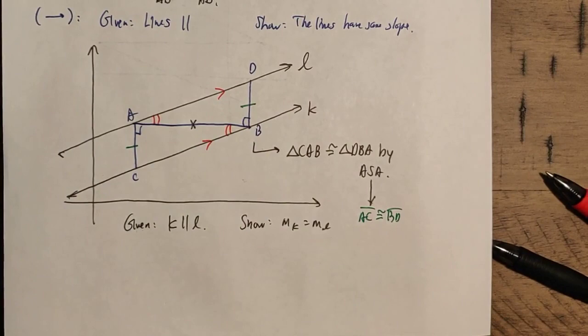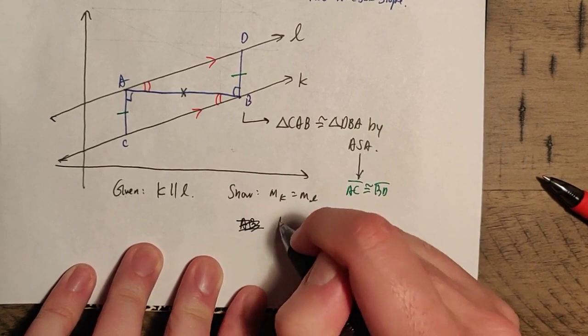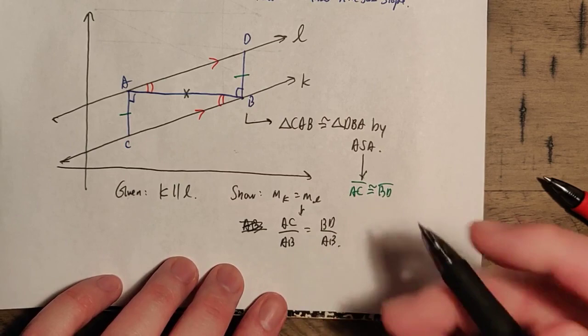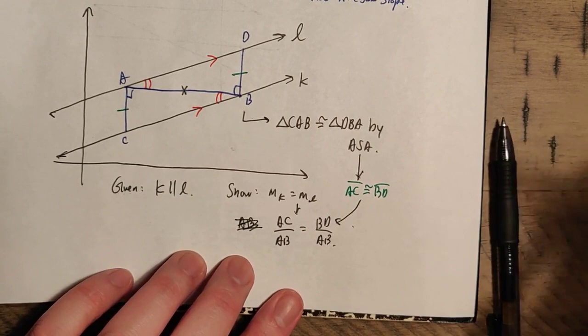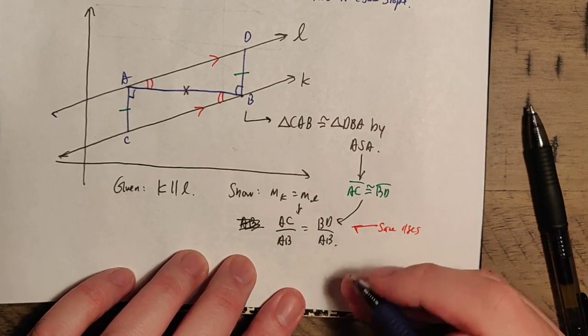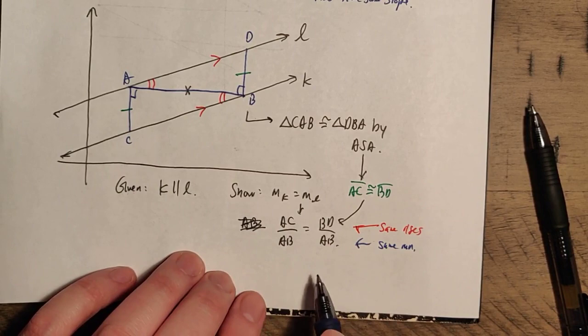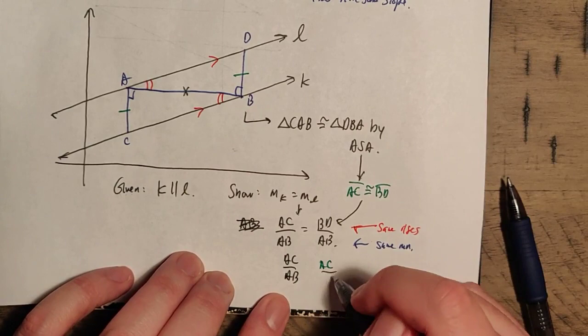Why does that matter? The slope of line K is AC over AB, and the slope of line L is BD over AB. They both have the same denominator, so the runs are the same. We just need to show the rises are the same — and we already have AC congruent to BD. So by substitution: AC over AB equals BD over AB, and since BD equals AC we can swap it in. Therefore the slopes are equal, and indeed the lines must have the same slope. This completes the proof in both directions.